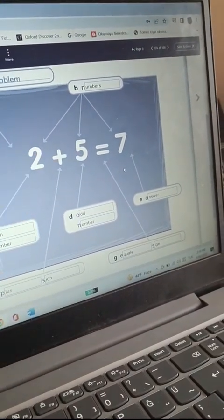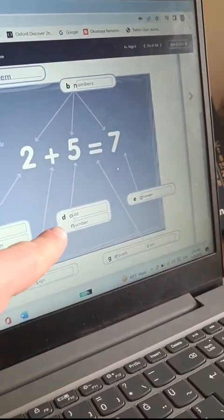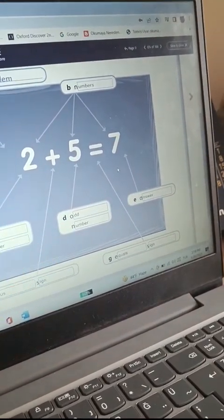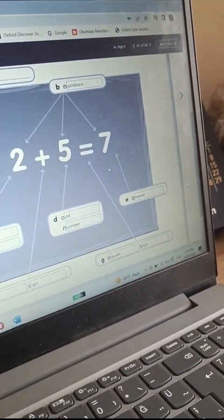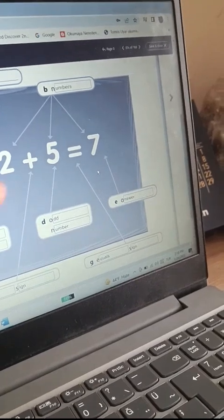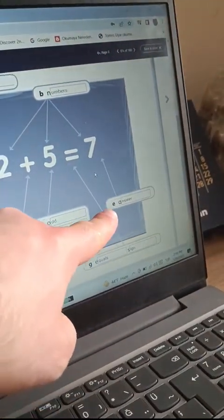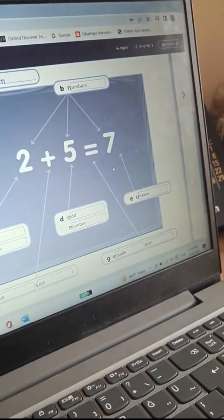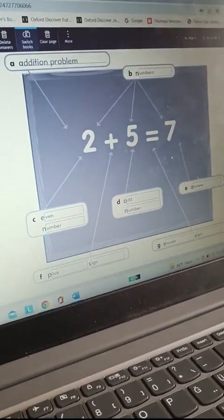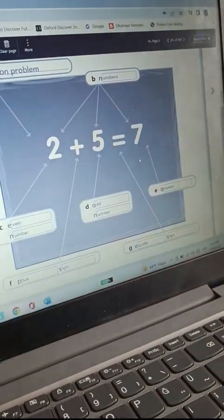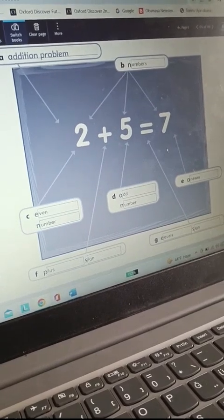Five, it is an odd number. What is this sign? And what is seven? Seven, it's an answer. You can see the numbers here, two, five, seven, and this is an addition problem. Thank you.